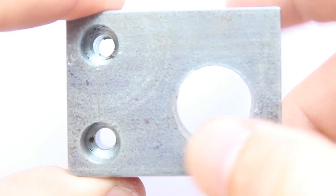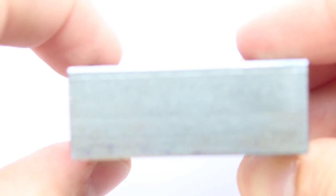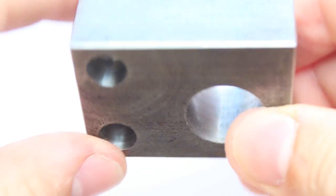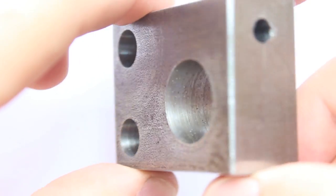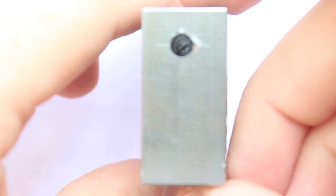From here, the drafter would determine the other two views. Let's say that the top view and the right side views would be chosen for the blueprint.